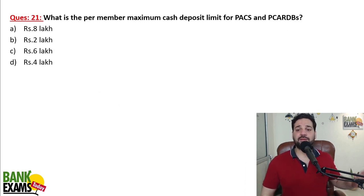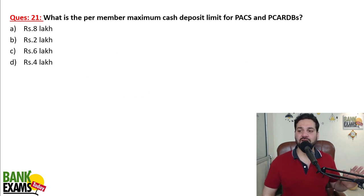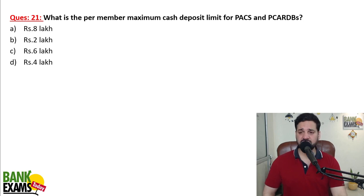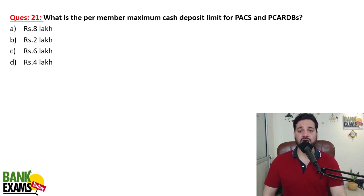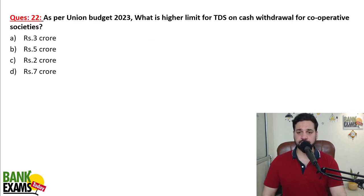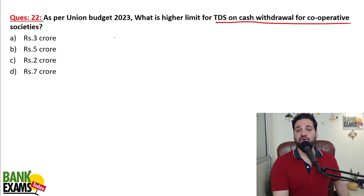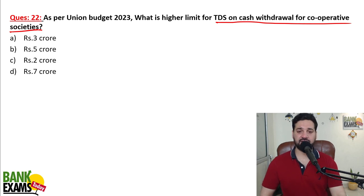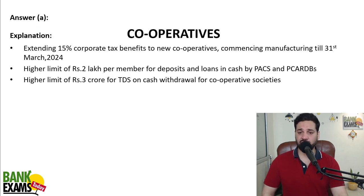What is the per-member maximum cash deposit limit for PACS and PACARDBS agriculture credit societies? The per-member limit is 2 lakh rupees. What is the higher limit for TDS on cash withdrawal for cooperative societies? The new limit is 3 crore.